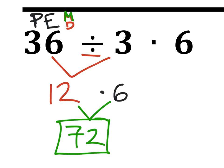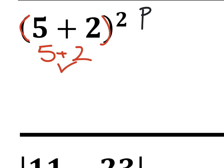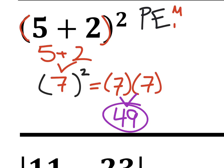For the next problem: there are parentheses, so I look inside: 5 plus 2 is 7. That gives us 7 to the power of 2, which is the exponent step. Seven squared is the same as 7 times 7, which is 49. There was no need for multiplication, division, addition, or subtraction — parentheses and exponents were enough to complete this problem.